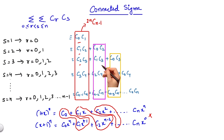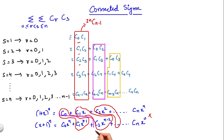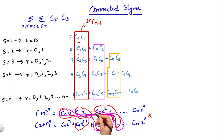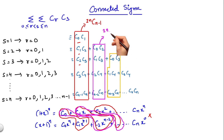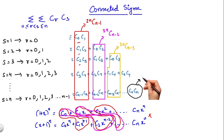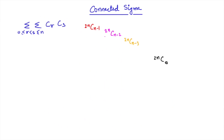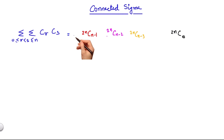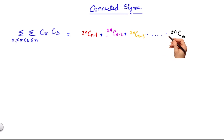Similarly, for the pink section: C0·C2 corresponds to power x^(n-2), C1·C3 also corresponds to x^(n-2), and so on. So this summation equals 2nC(n-2). Similarly, the next summation equals 2nC(n-3), and so on, until the last summation equals 2nC0. Hence, the total sum becomes 2nC(n-1) + 2nC(n-2) + 2nC(n-3) + ... + 2nC0.